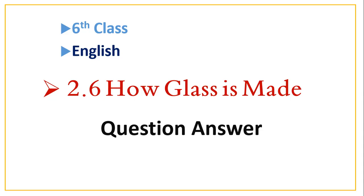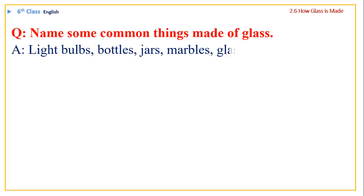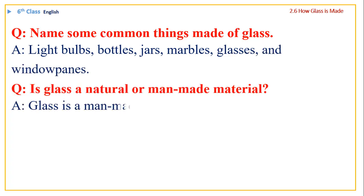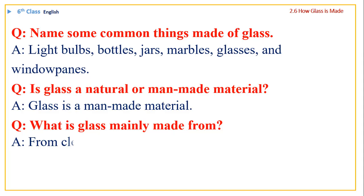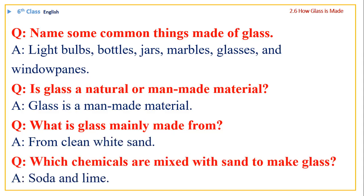6th class English, chapter 2.6: How Glass is Made — question and answer. Name some common things made of glass. Light bulbs, bottles, jars, marbles, glasses, and window panes. Is glass a natural or manmade material? Glass is a manmade material.